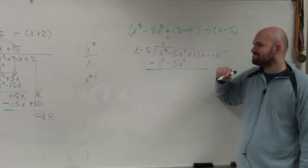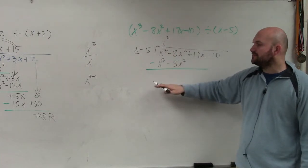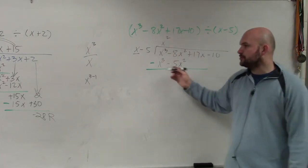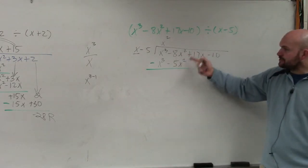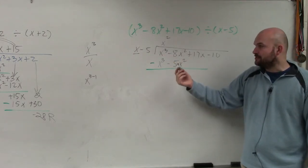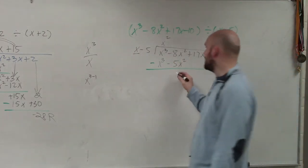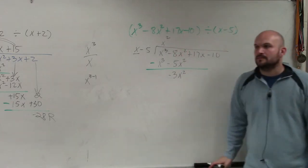Zach? Probably not what you need to be doing right now. Now, we subtract vertically. x cubed minus x cubed is 0x cubed, which is just 0. Negative 8x squared minus a negative—remember, when you minus a negative, that's going to turn to a positive. So therefore, I have negative 3x squared.